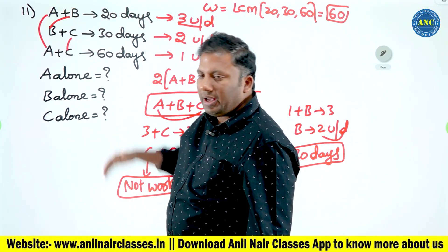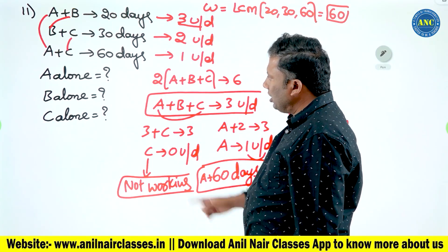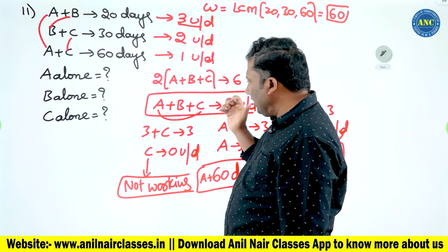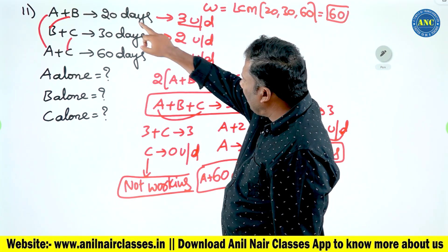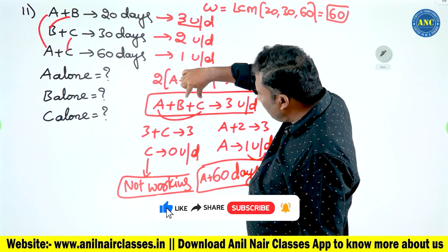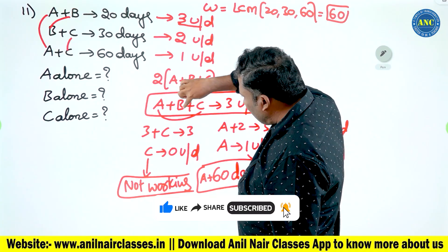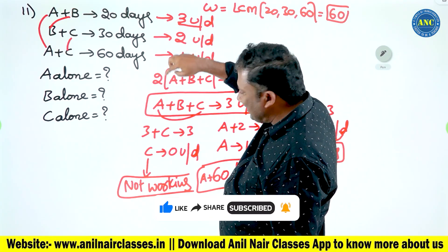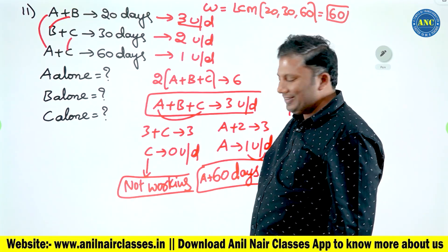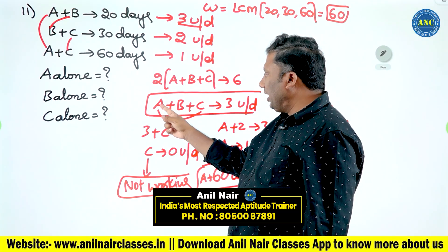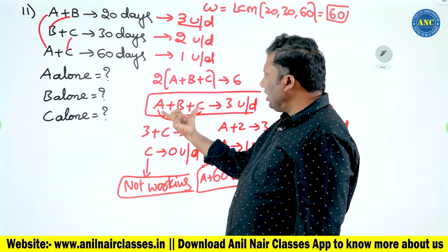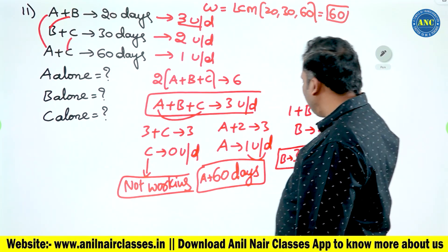Adding all combinations: 2(A + B + C) = six units per day, so A plus B plus C = three units per day. C = zero units per day. B plus C = two units per day, so A = one unit per day. A plus C: one plus B equals three, so B = two units per day, meaning B completes work in 30 days.